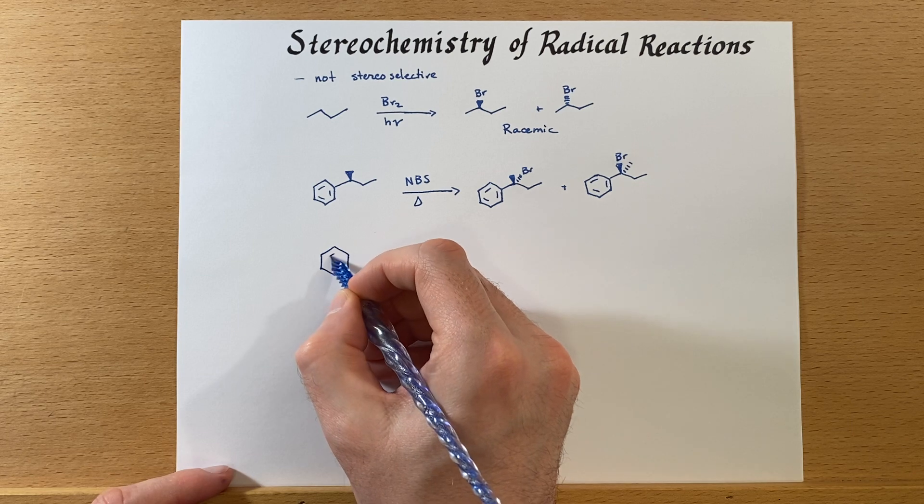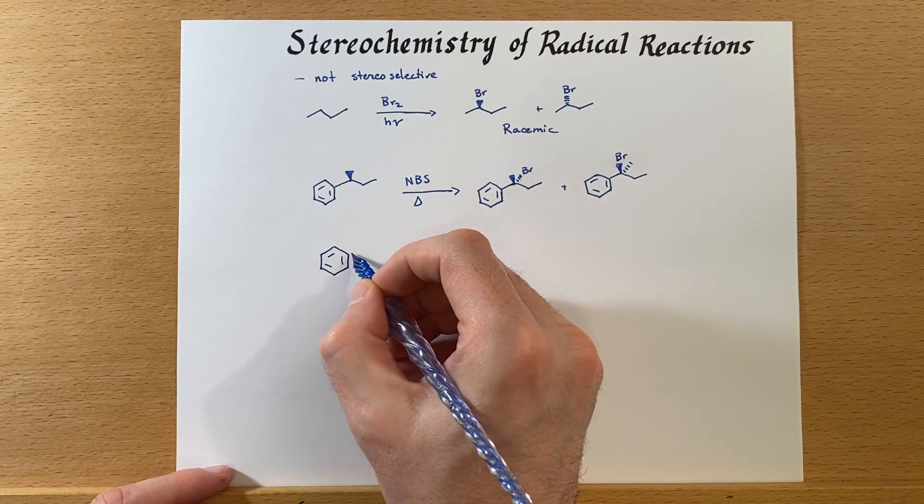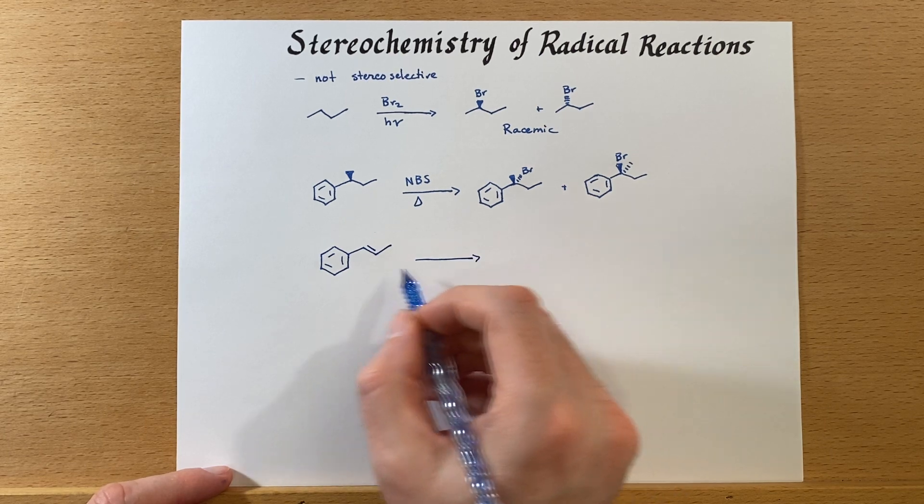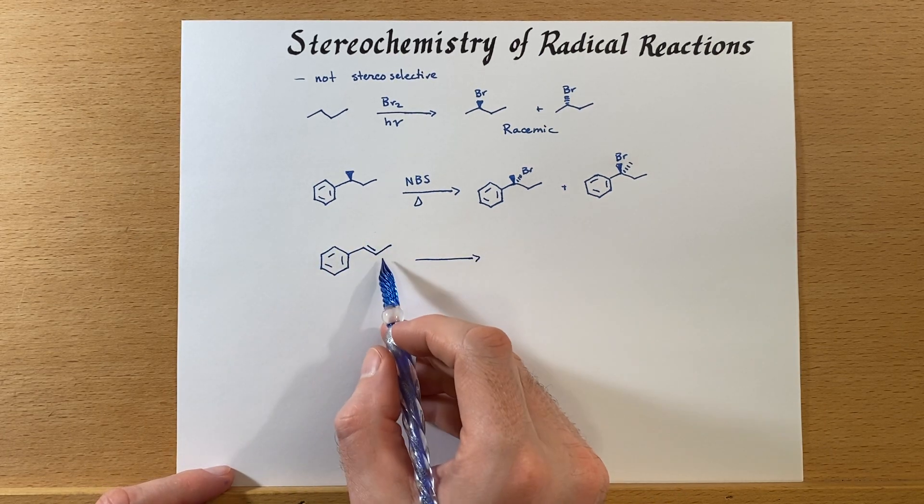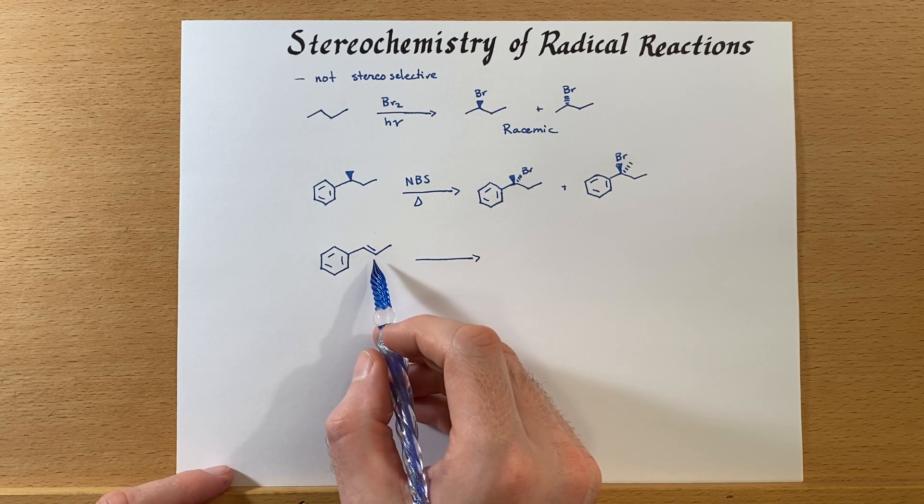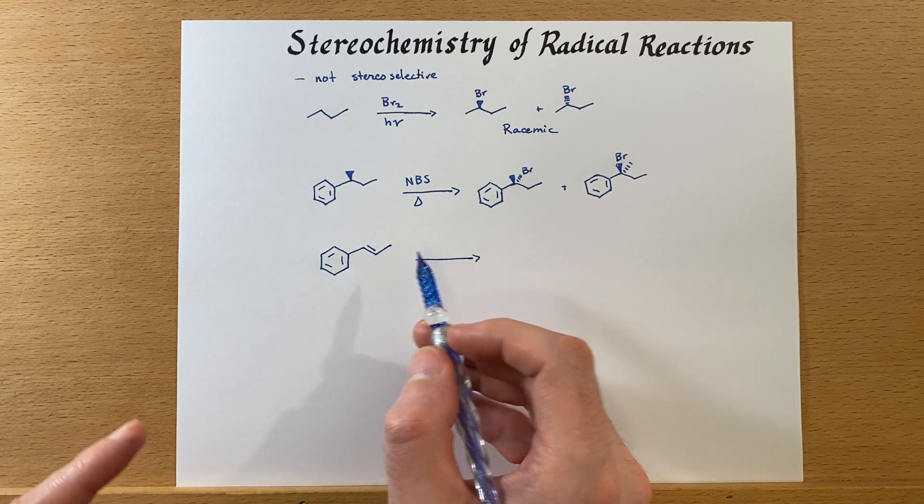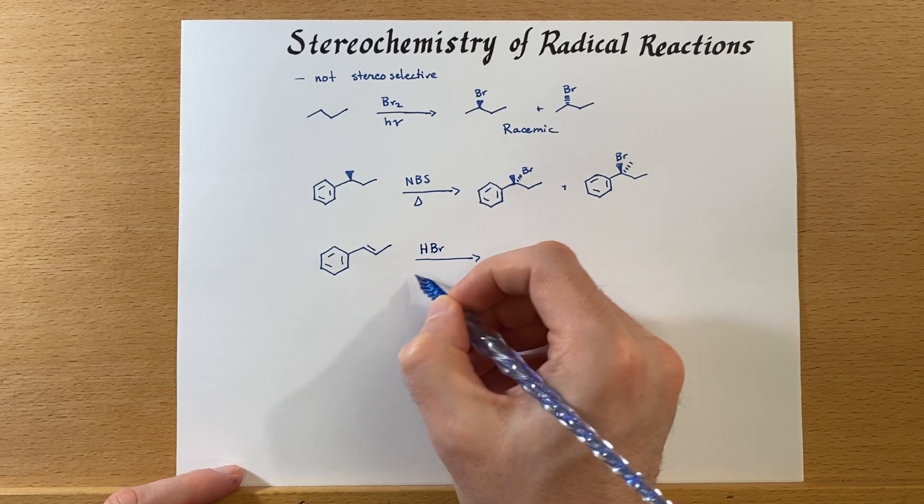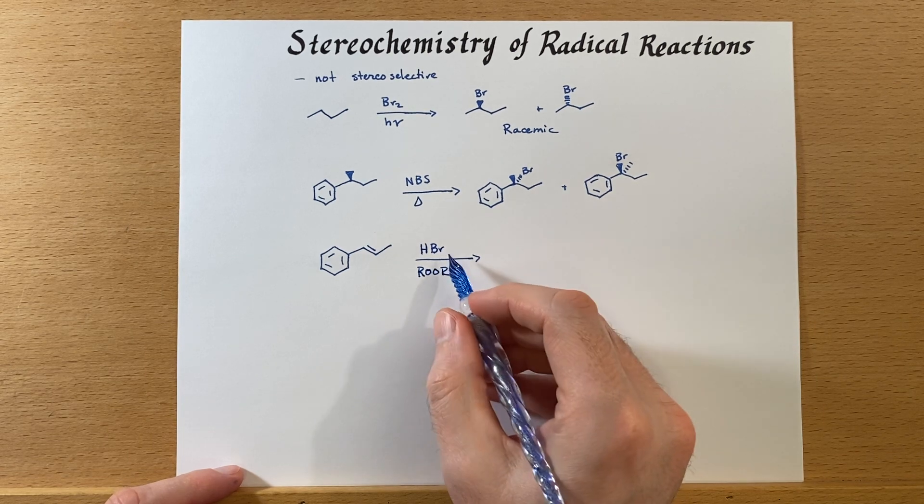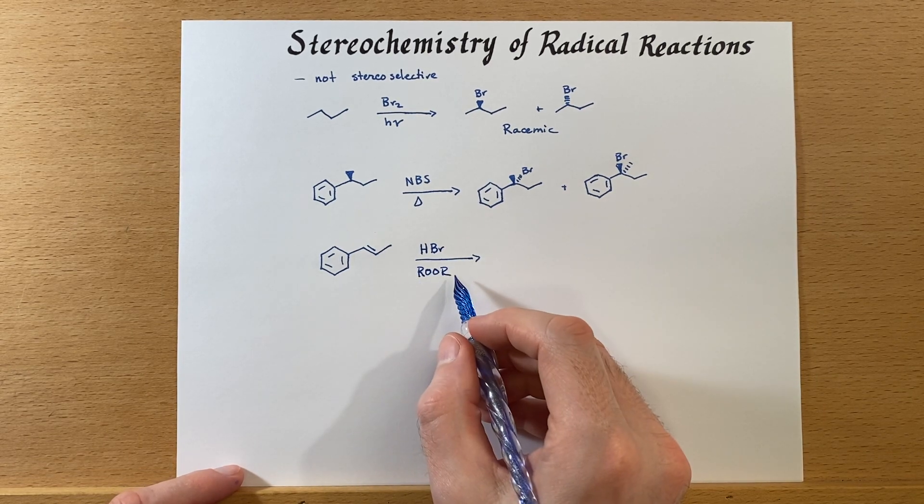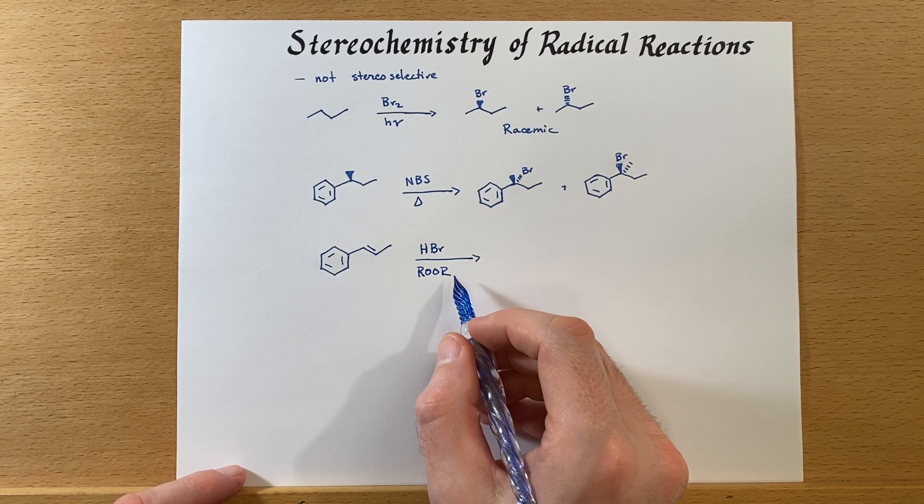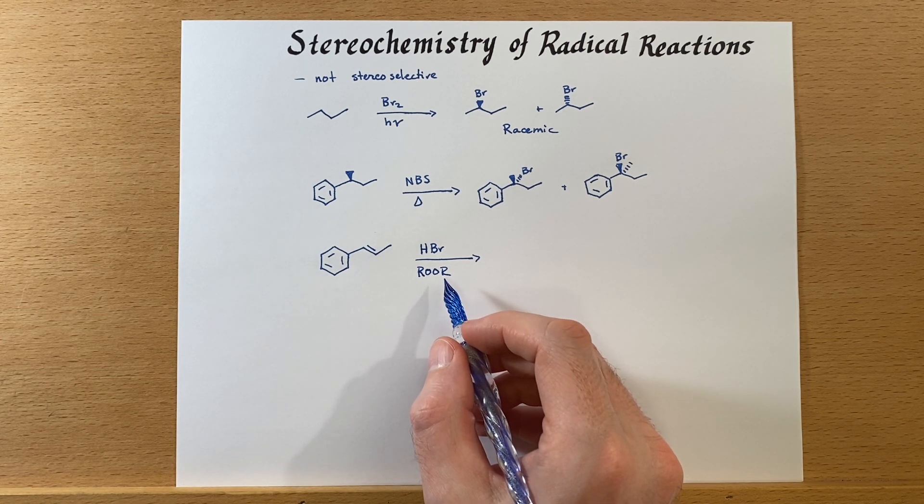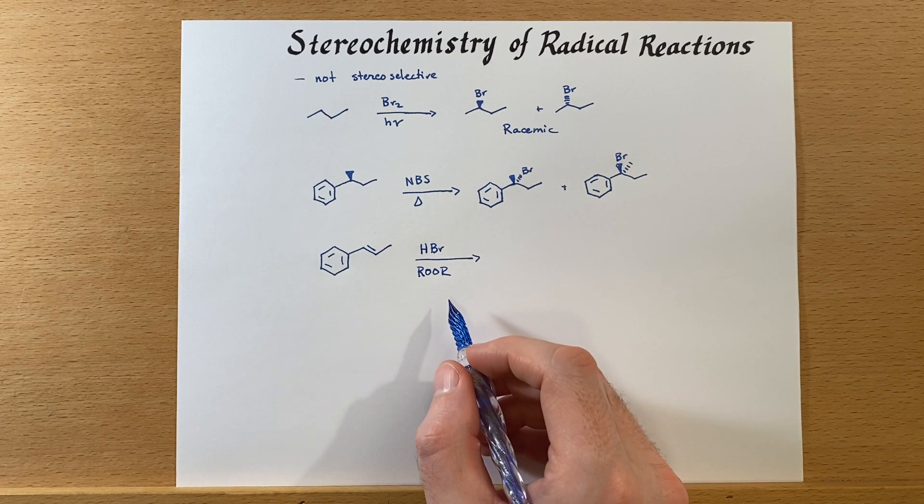Now here's another reaction. This is not a chiral molecule, but as soon as we substitute on here we can have chirality come into play. So we add HBr, have some peroxide just to make sure that this is going in the anti-Markovnikov fashion.